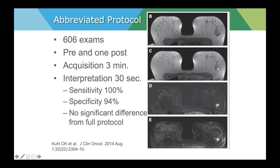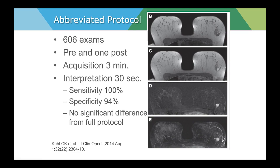Most breast MRI is performed with T1 fat saturation, but it is perfectly acceptable to perform it without fat saturation and then look at the subtraction images to allow brightly enhancing masses to show up. In this particular trial, the acquisition time is only three minutes — one pre and one post. With just two sequences converted to subtractions, interpretation can be done in 30 seconds with extremely high sensitivity and specificity. The proposal is that women could be screened in three minutes, and if needed, brought back for a complete diagnostic protocol with multiple additional sequences.